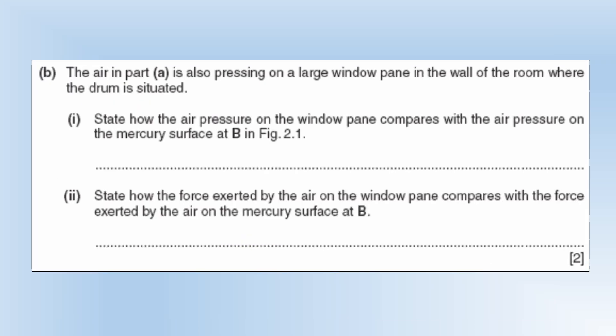So the air in part a is also pressing on a large window pane in the wall of the room where the drum is situated. State how the air pressure on the window pane compares with the air pressure on the mercury surface at b in the diagram. Well they're going to be the same because b in the diagram is open to the atmosphere a window is open to the atmosphere so they're both going to experience exactly the same pressure.